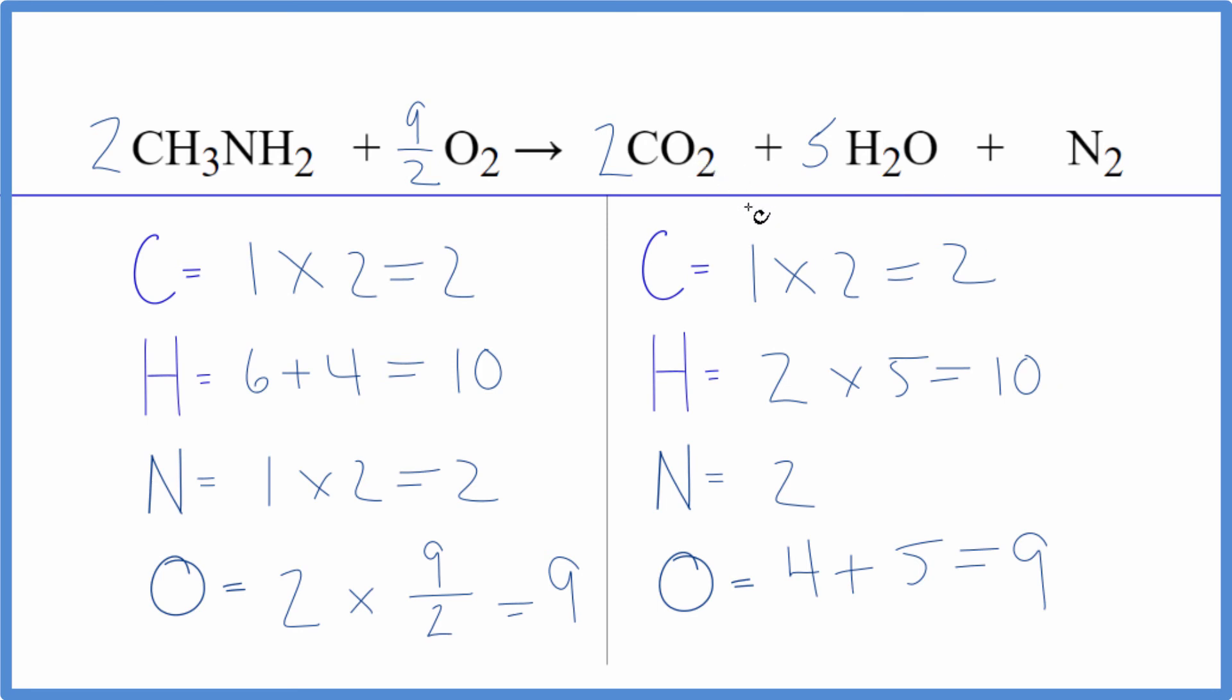Some teachers don't like to have the fraction here, but that's easy to fix. If we take and multiply the whole thing, all the coefficients by two, two times two is four, two times nine over two, twos cancel out we get nine, two times two again four, two times the five is ten.